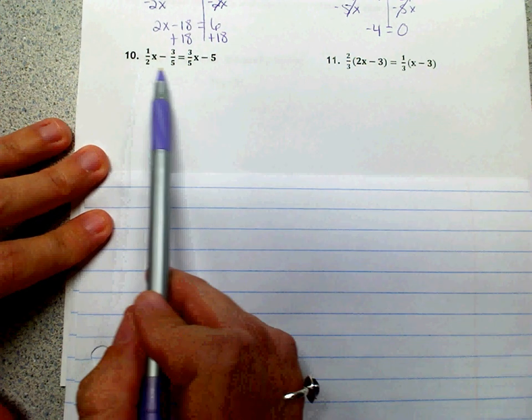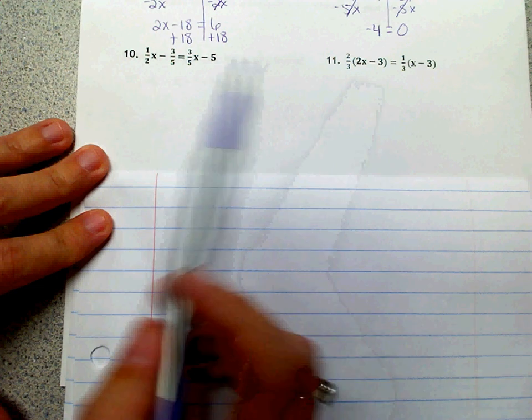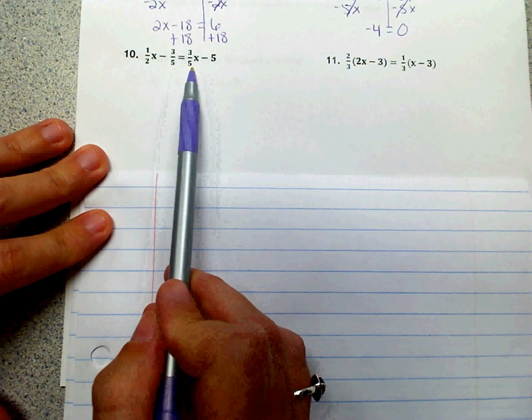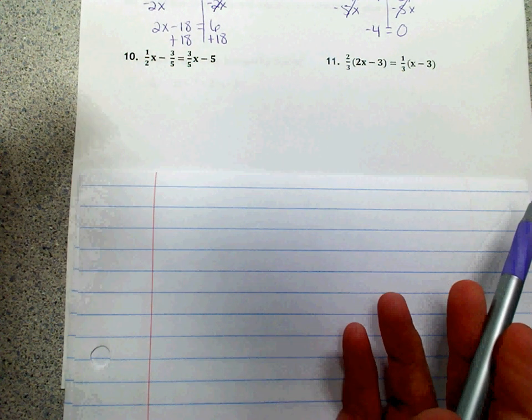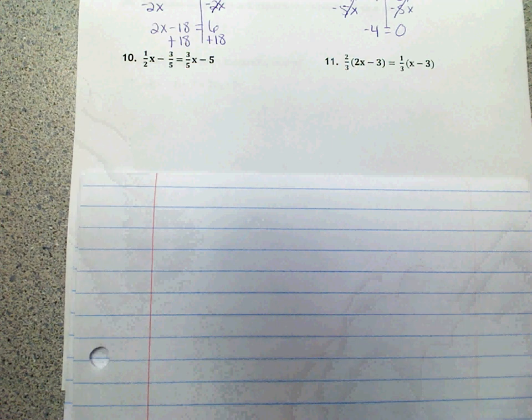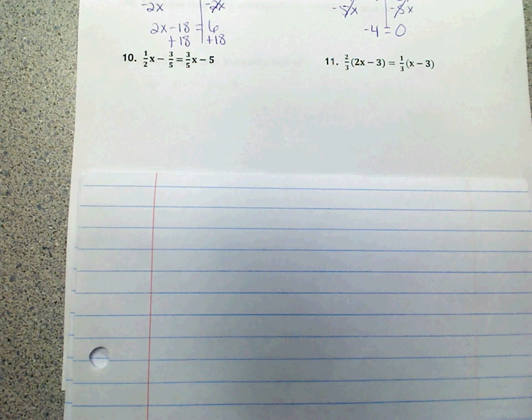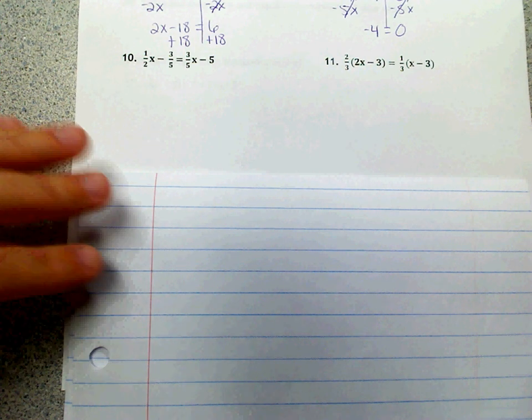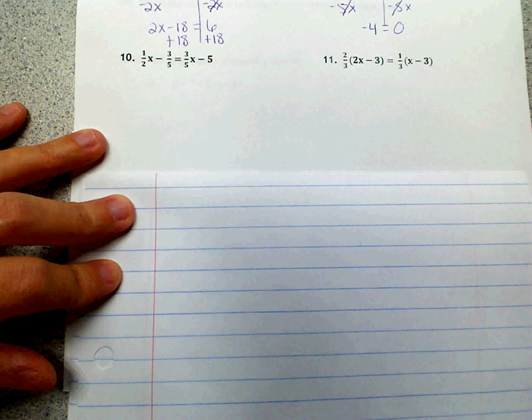So if we look at the denominators of our fraction, we have a 2 and a 5 and a 5. So what we're looking for is a multiple of both of those. 2 can go into the same number that 5 can go into. And the easiest way to do that, there's many that you could pick from, but the easiest way is just multiply your two different denominators together. So 2 and 5 make 10. So we're just going to multiply both sides of the equation by 10.